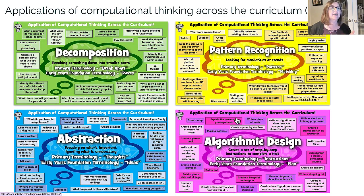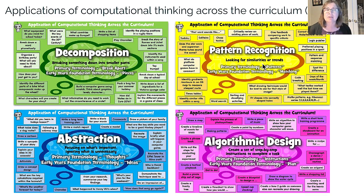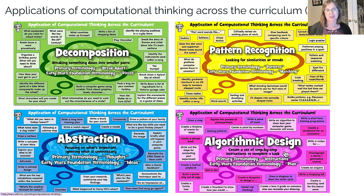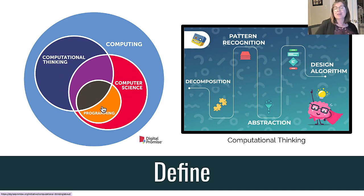So what is computational thinking? These are the applications of computational thinking across the curriculum that we talked about last time, from school district 61 in British Columbia. Decomposition is breaking something down into its smaller parts; pattern recognition is looking for similarities or trends; abstraction is focusing on what's important and ignoring what is unnecessary; and algorithmic design is creating the step-by-step instructions. Those are the steps within computational thinking. But there's more than computational thinking when we think of computing science as a whole, when we think of programming or coding, or computing as a whole.